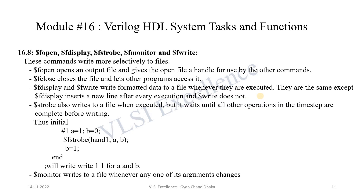Now let's see a few more system tasks: $fopen, $fdisplay, $fstrobe, $fmonitor, and $fwrite. These system tasks write more selectively to a file. $fopen opens an output file and gives it a handle to be used by the other commands — it returns a handle and creates an output file. $fclose closes the file and lets other programs access it.